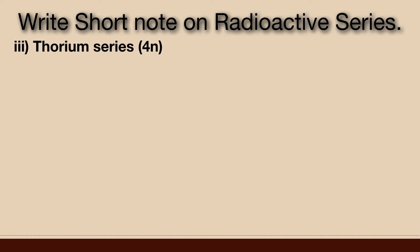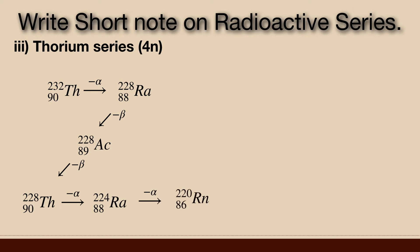Thorium series, the mass number of each member can be expressed as 4n. The 4n chain of thorium 232 is commonly called thorium series. Beginning with naturally occurring thorium 232, the series includes the following elements.